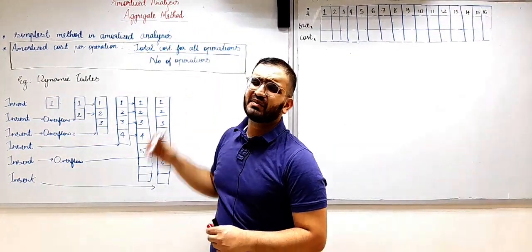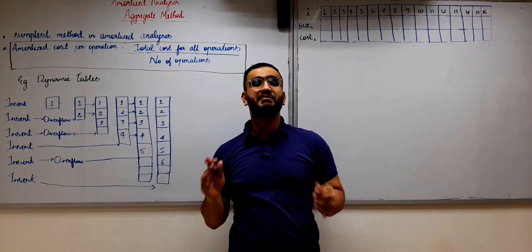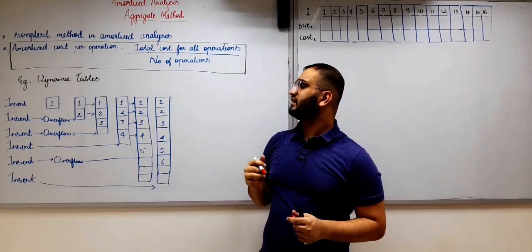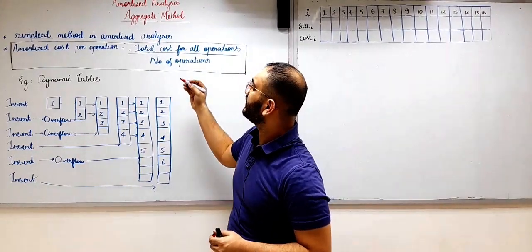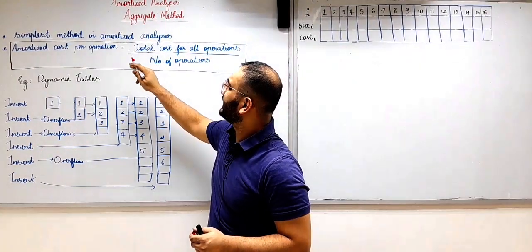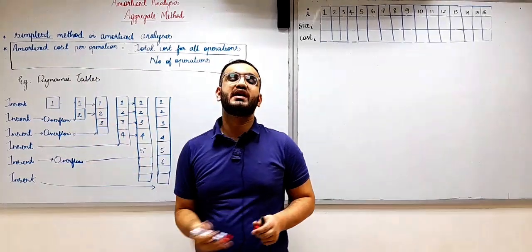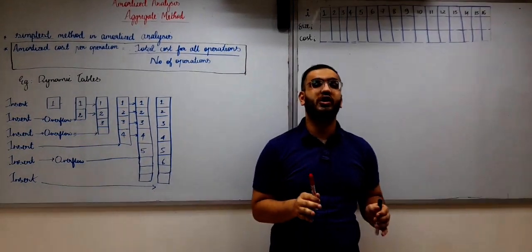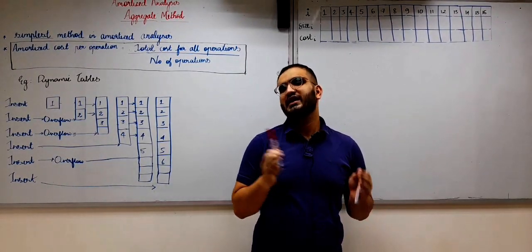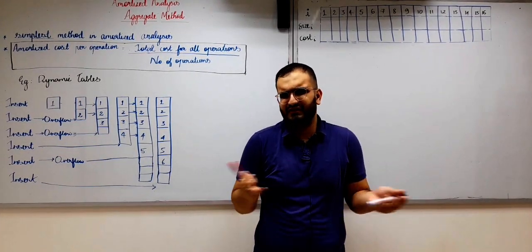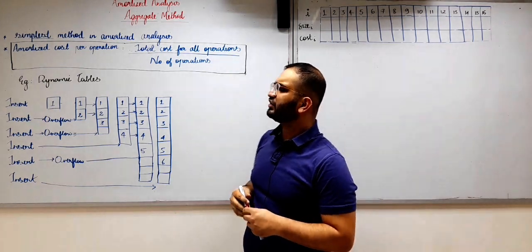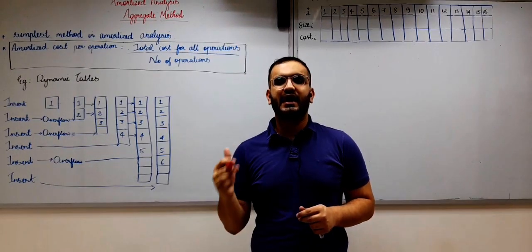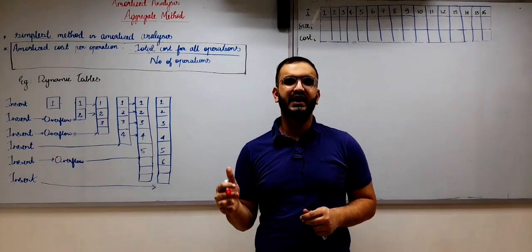The aggregate method is basically the simplest method of amortized analysis. The reason is it is hidden in the formula of the aggregate method, which says that the amortized cost per operation is equal to the total cost of all the operations divided by the number of operations. Very easy, right?